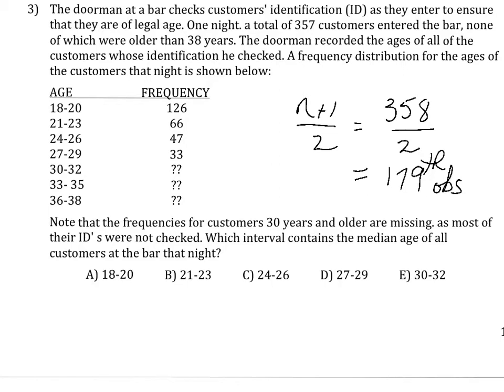Well, the first class has 126, the next 66, and that will bring us to 192. So that means that 179 must be in this class. So the answer is 21 to 23. Your answer is B.